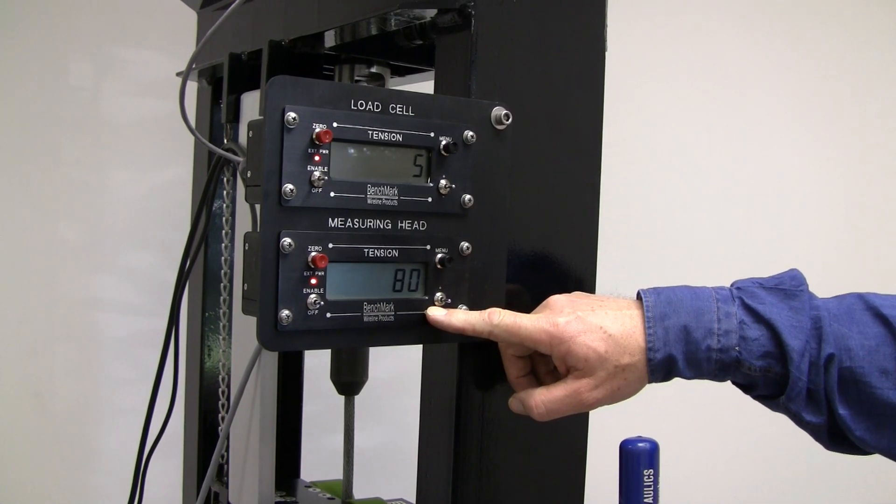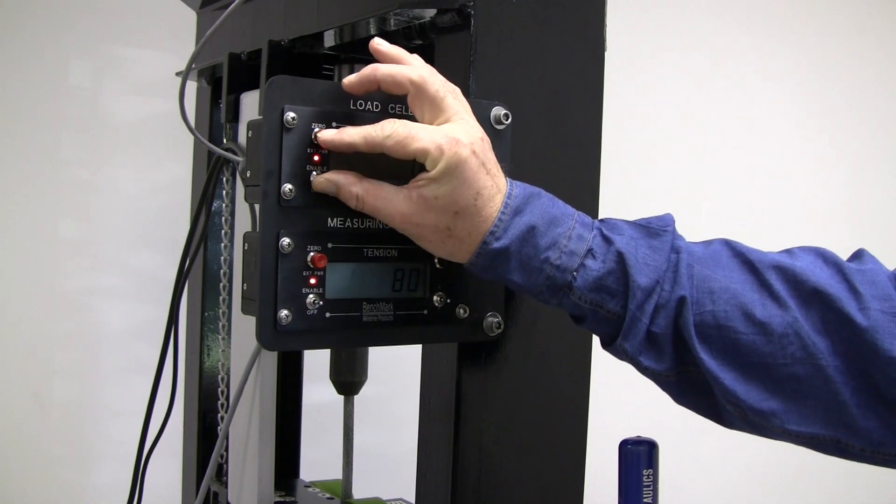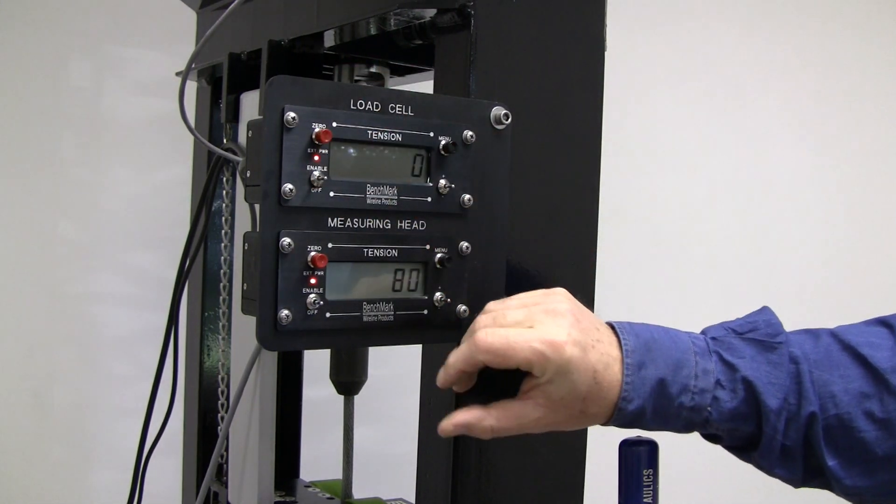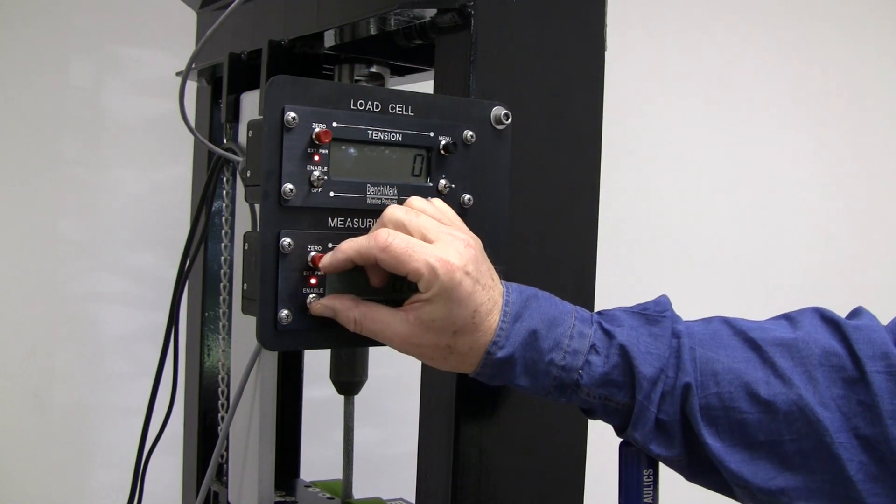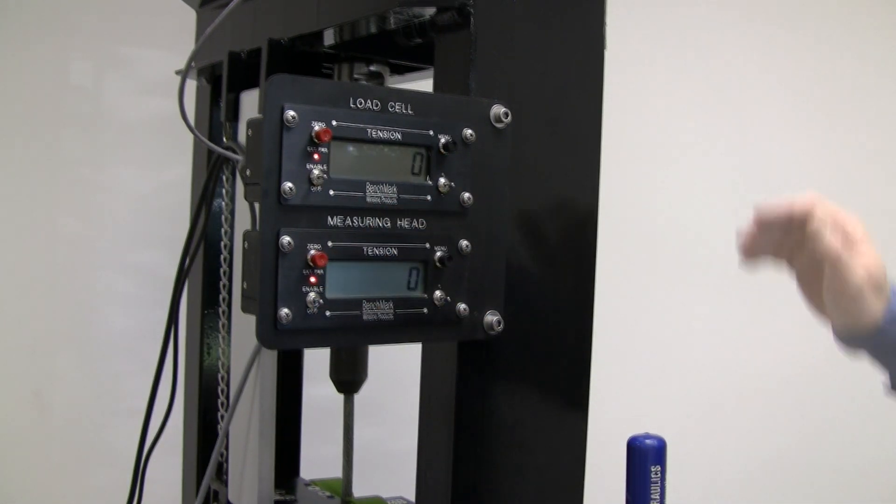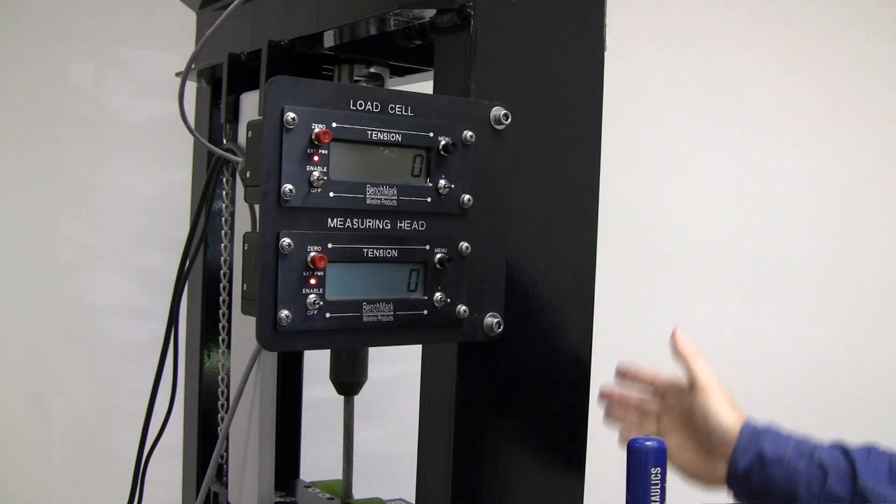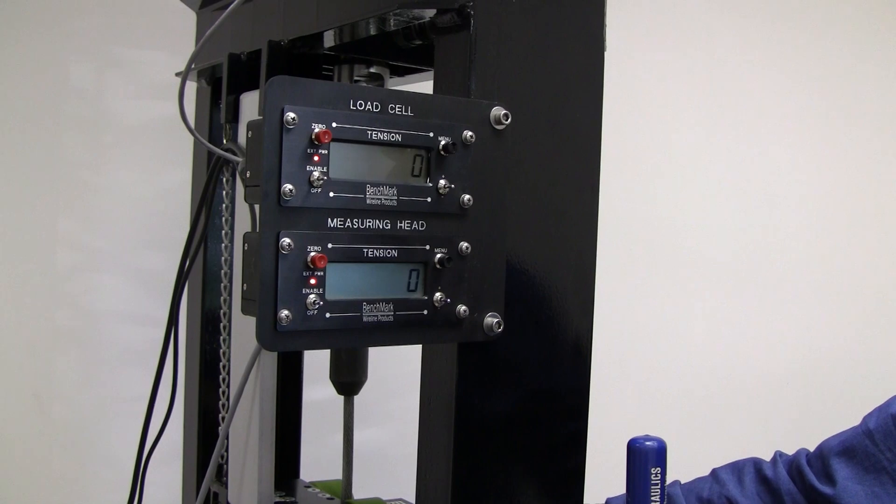Both the load cell and the load pin need to be synchronized to zero in order to perform the validation. This is done by pressing up the enable button and while holding pressing the zero button. Any increase in tension in the load cell should also be seen correspondingly in the load pin as they are now part of the same system.